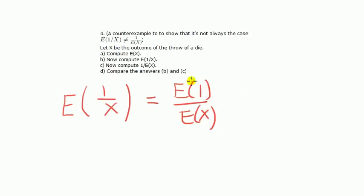But the expected value of a constant is a constant, so in the numerator it's 1. The expected value of 1 over x is the expected value of x. So I can say that the expected value of 1 over x is equal to 1 over the expected value of x. Now that's the reasoning that many of you guys make.